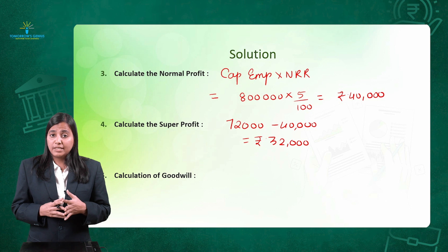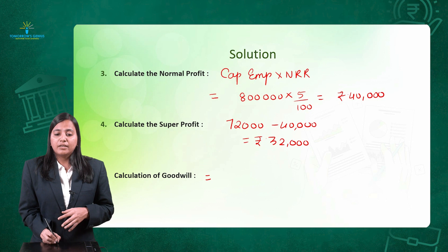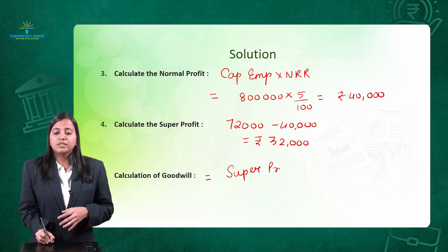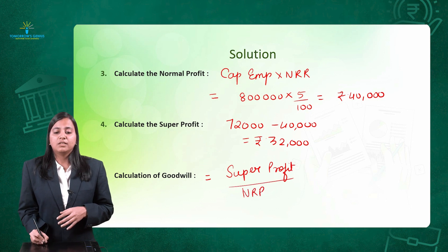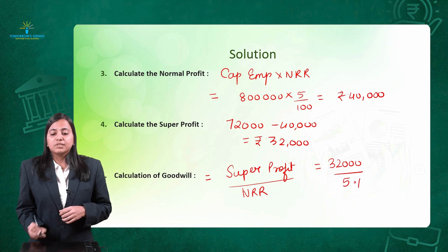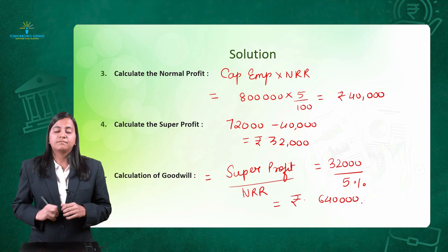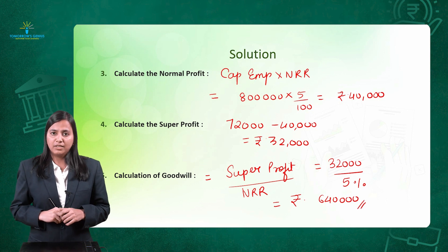Since we are using the capitalization of super profit method, goodwill is calculated by the formula: super profit divided by normal rate of return. Super profit from step 4 is 32,000, and normal rate of return from the question is 5%. So goodwill amounts to rupees 6,40,000.